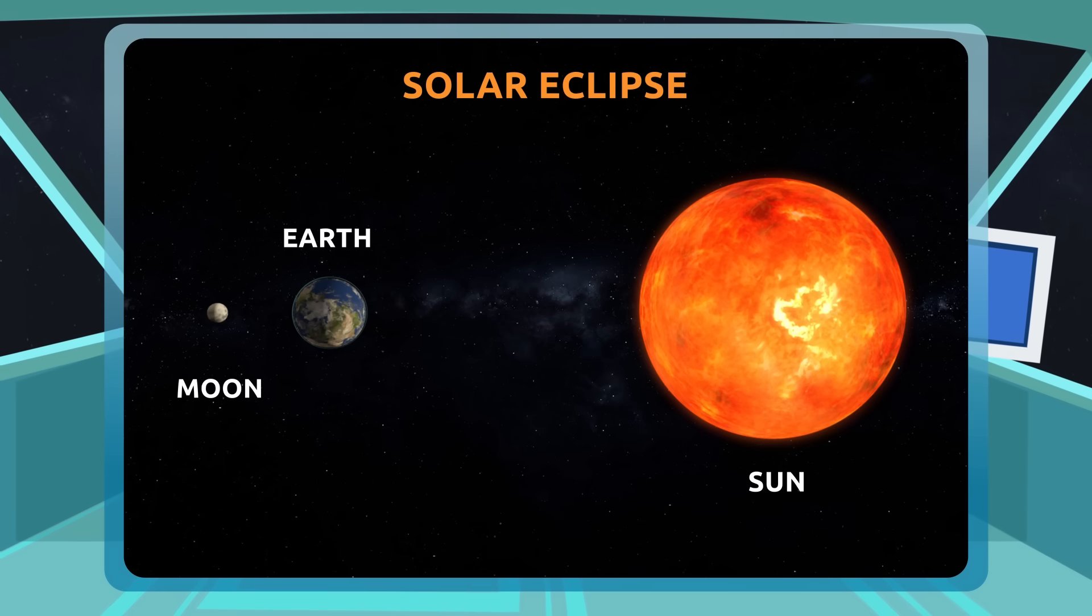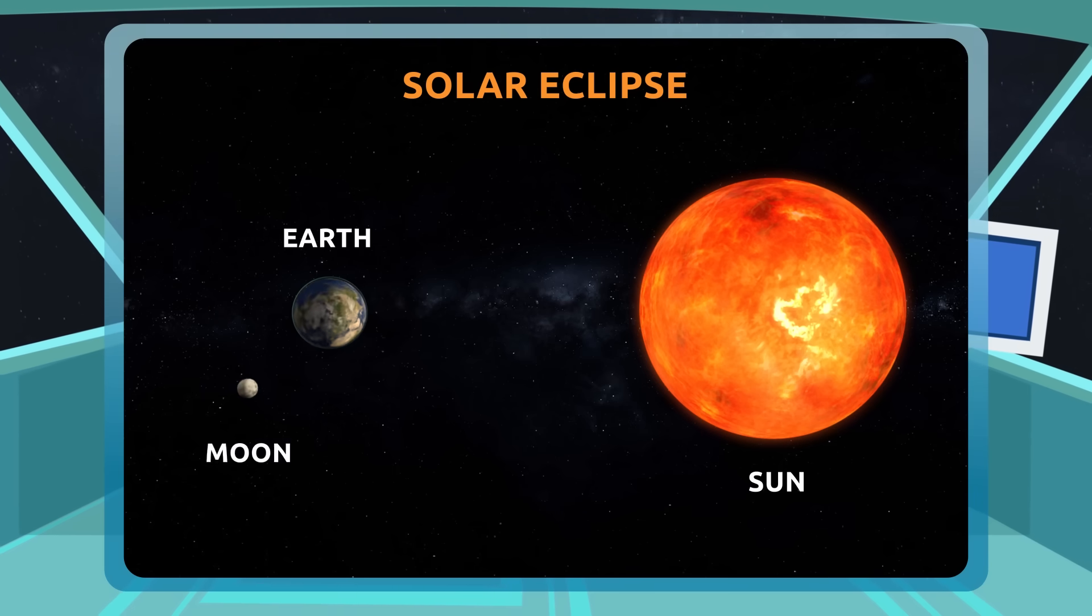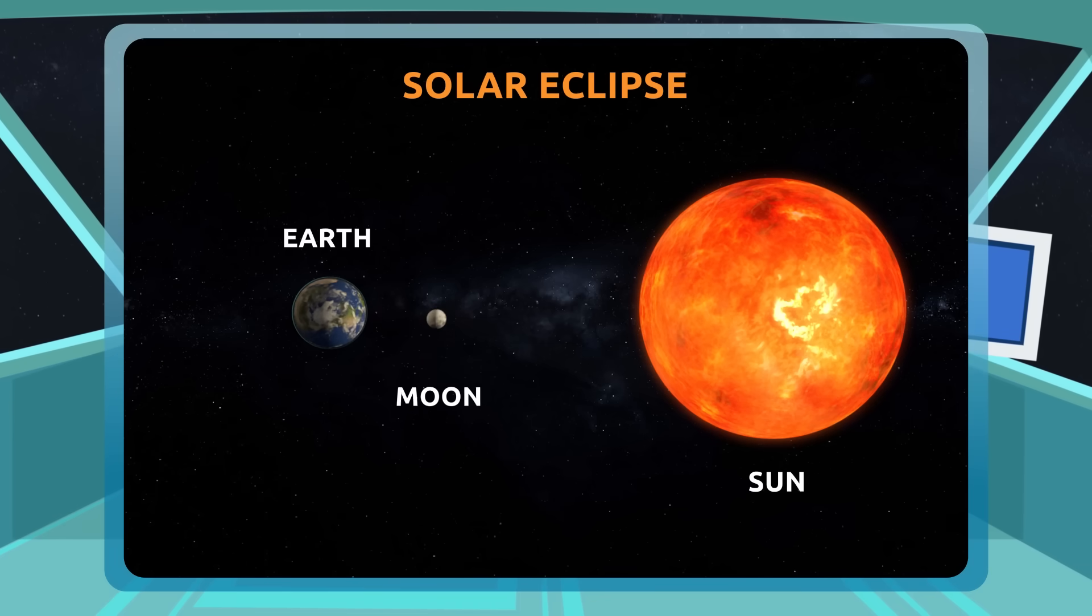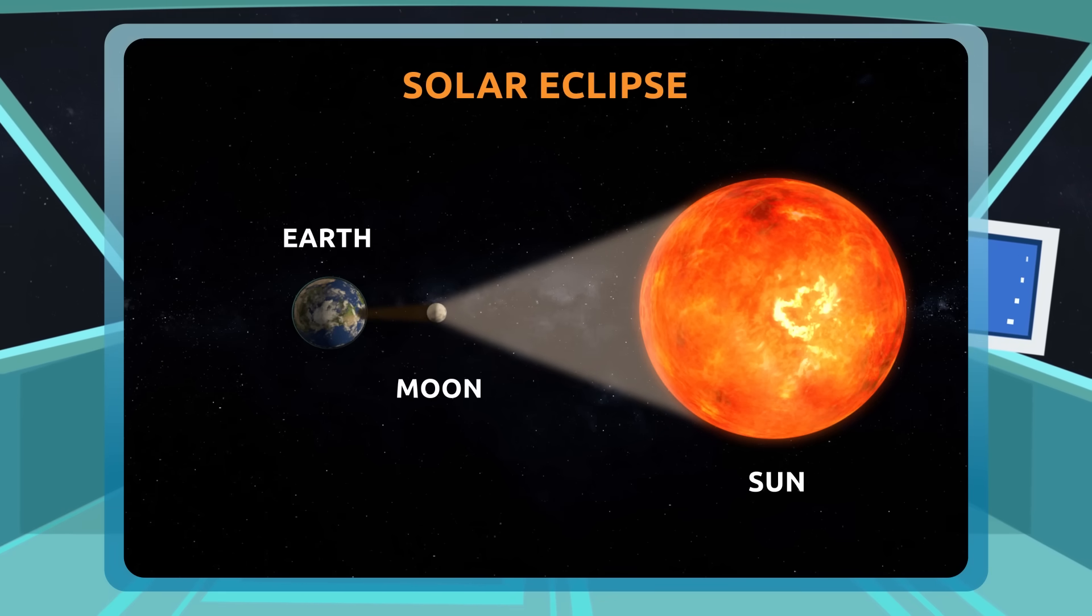We can observe two different types of eclipses from the Earth. Solar eclipses occur when the Moon comes between the Sun and the Earth, forming a shadow that covers the Earth's surface.